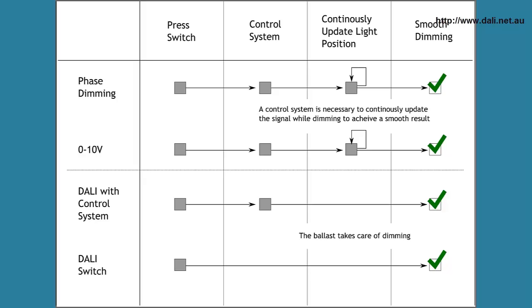Because you don't have to do this calculation with Dali, it is possible for a simple device such as a Dali switch to manually dim the lights smoothly, even when there is no control system.